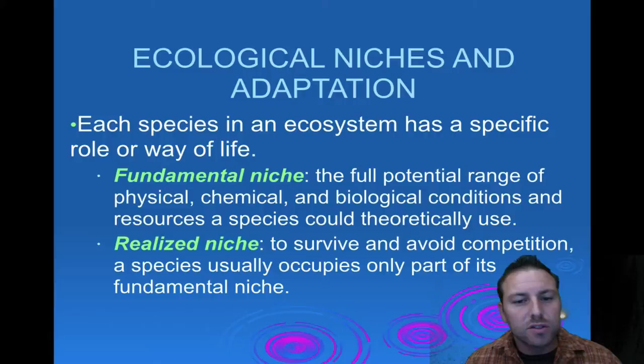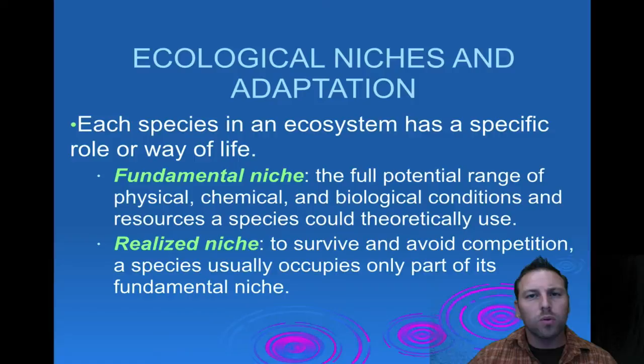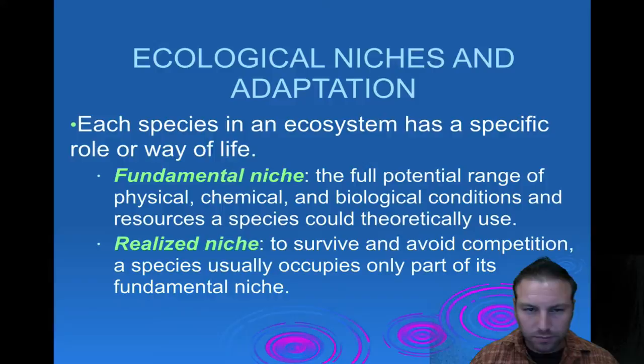Each species in an ecosystem has a specific role or way of life. This is known as a niche. There are different types: fundamental and realized niches. The fundamental niche is the full potential range — basically the actual possibility for an organism. The realized niche is the actual role it plays in order to avoid competition and survive — what the organism actually does versus what it could do.